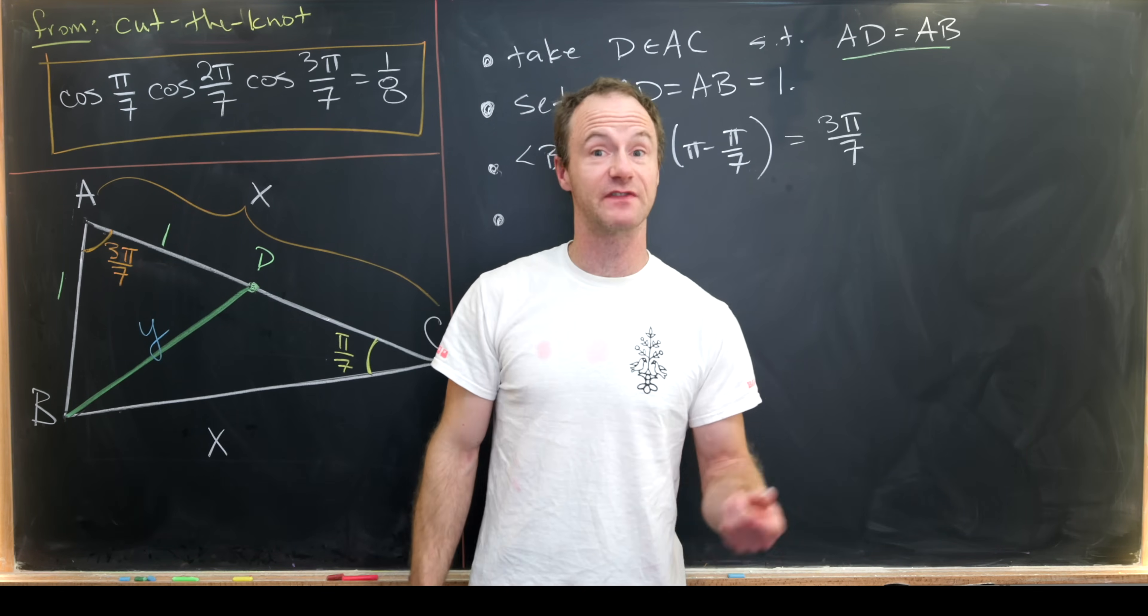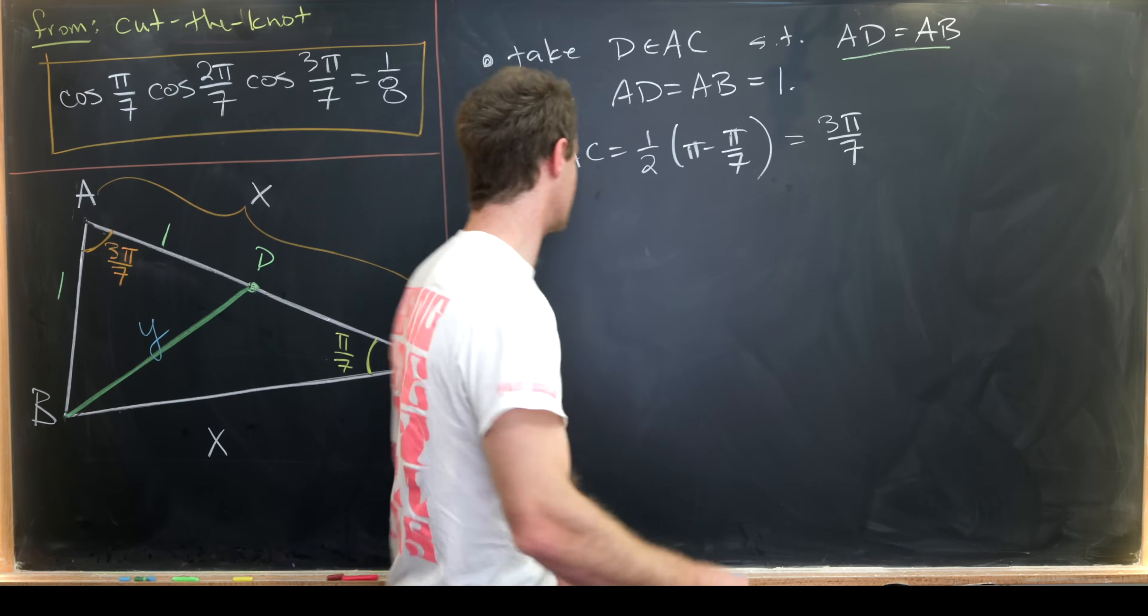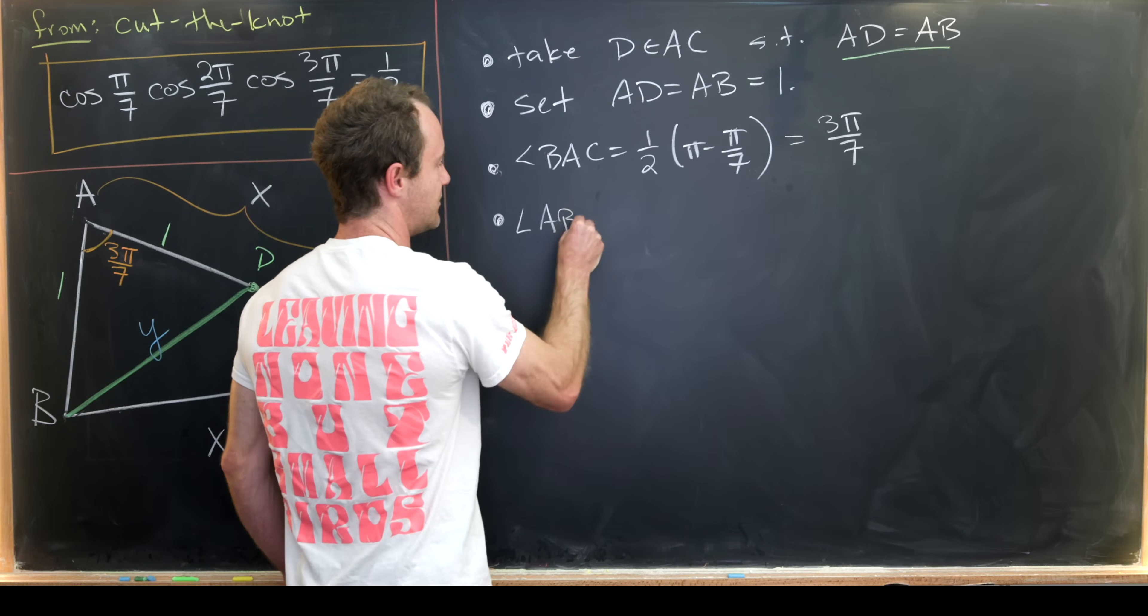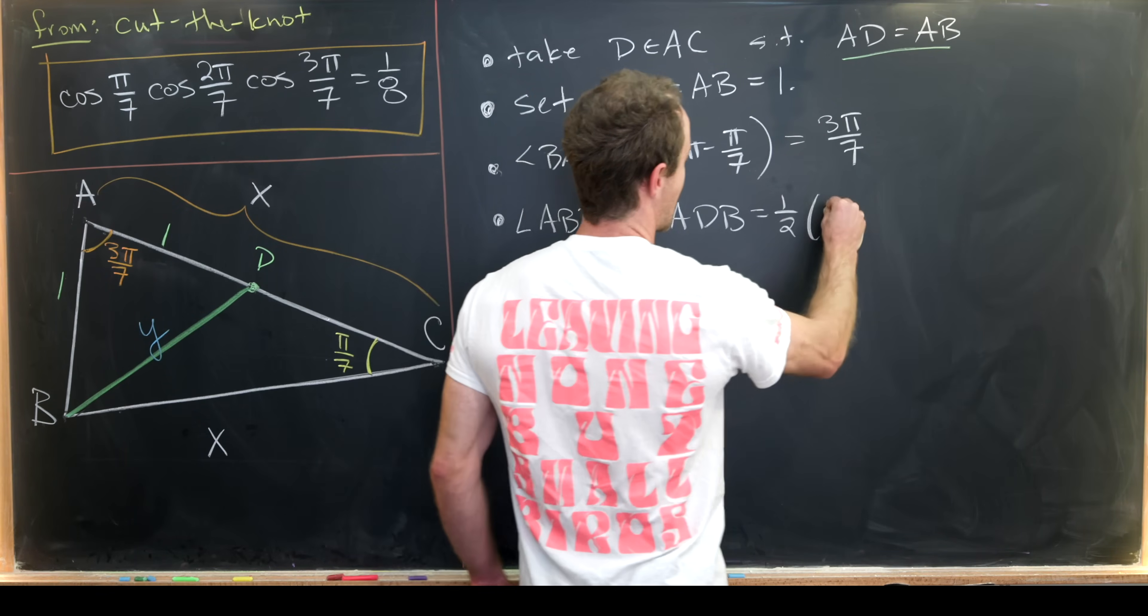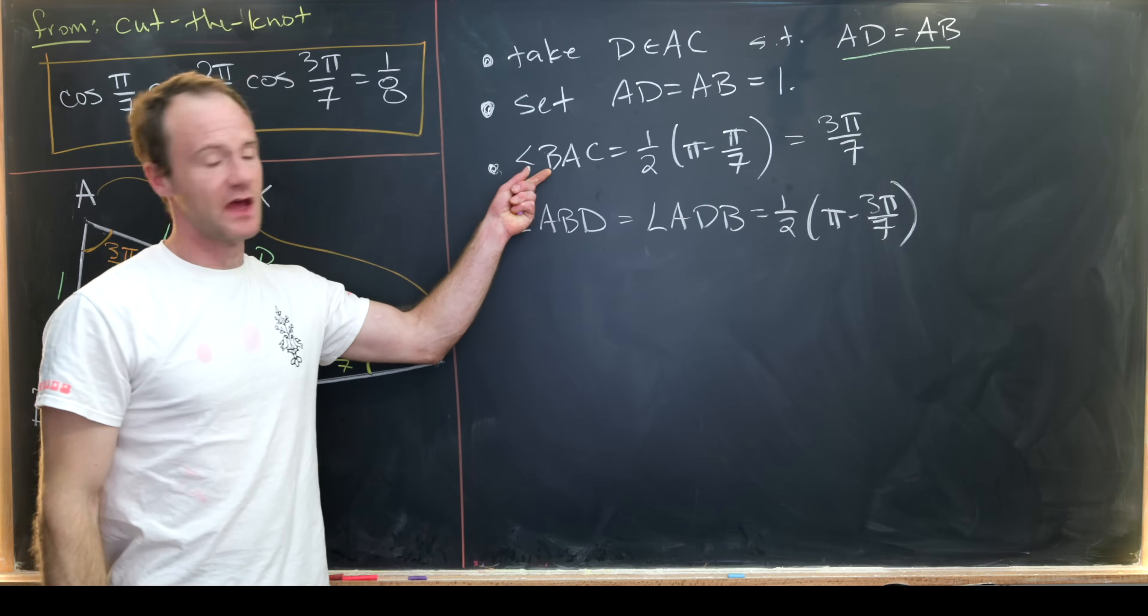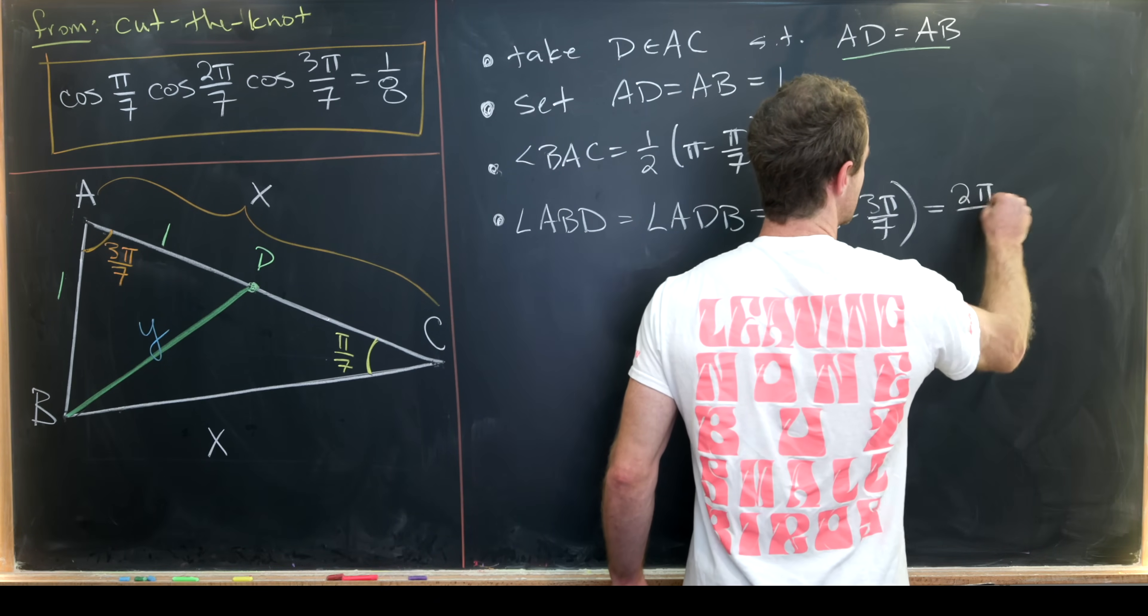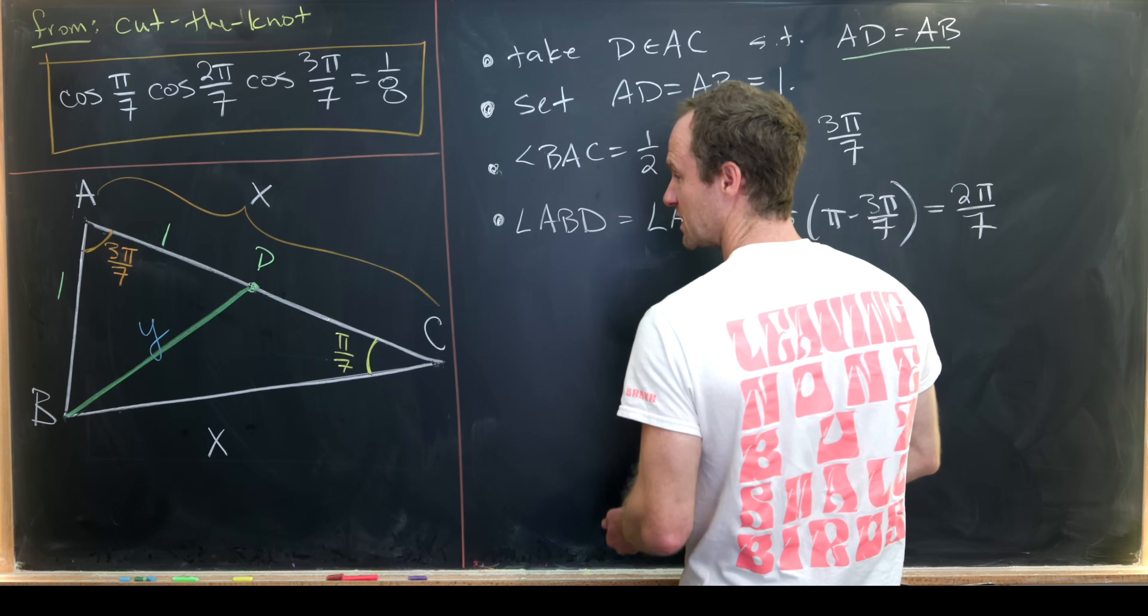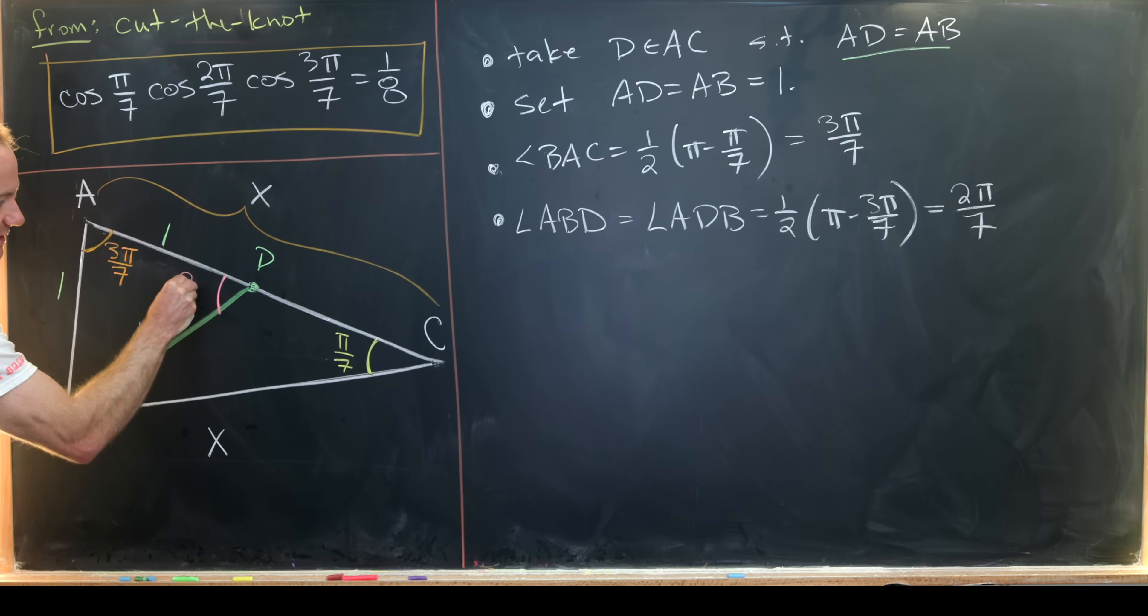Those have the same angle measure because they're opposite these sides that have the same length. So let's write that down. Angle measure ABD is the same thing as angle measure ADB which is one half pi minus 3 pi over 7 for the same sort of reason that we used up here. It's the same argument exactly. So making that calculation you'll see that we get 2 pi over 7. So let's maybe put that into our picture. So this angle right here is 2 pi over 7. And then this angle right here is also 2 pi over 7.